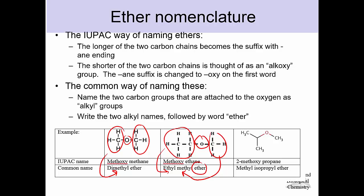There's also the IUPAC way of naming ethers. In that case you take the longest carbon chain as your base — so this would be your base alkyl group, call it ethane — and say there's a methoxy group attached to it. I personally think the common way of naming it is a little more straightforward, so I might go with that.